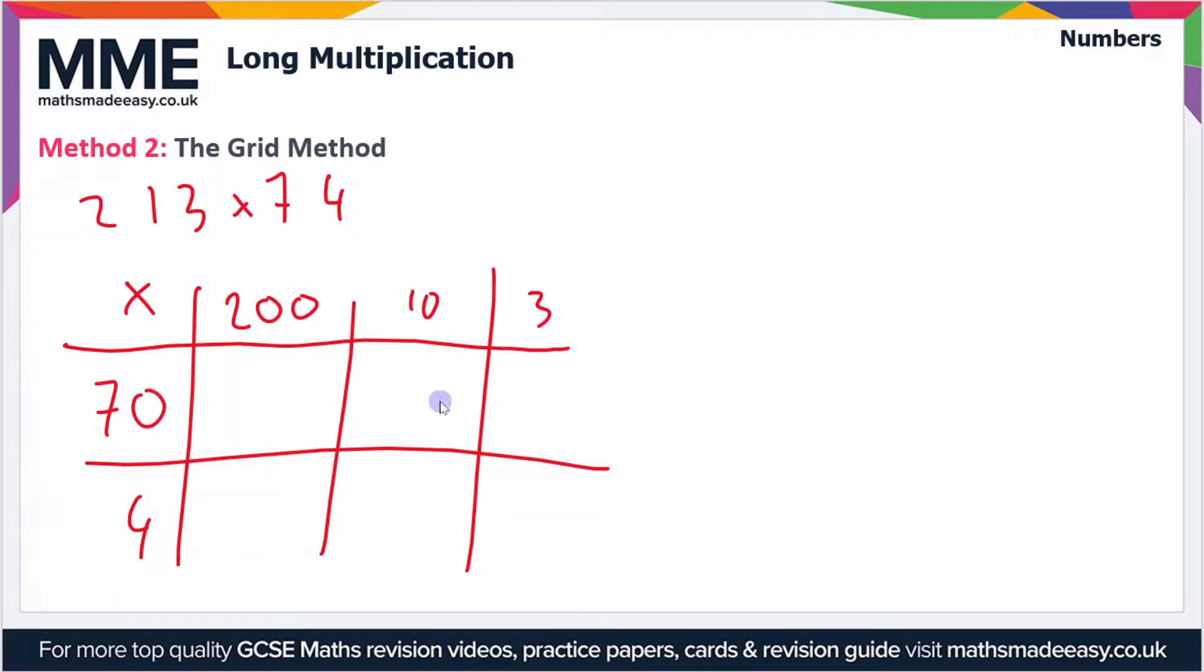We'll start with 200 times 70. You can treat 200 times 70 as 2 times 7, which is 14, and then you just add the zeros in. So there's three zeros here, so we put three zeros after the 14.